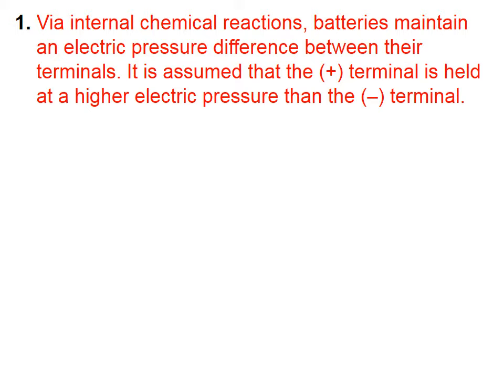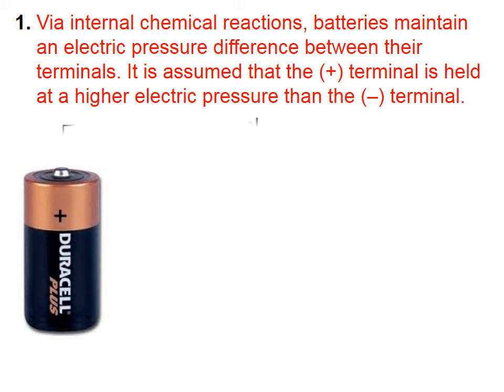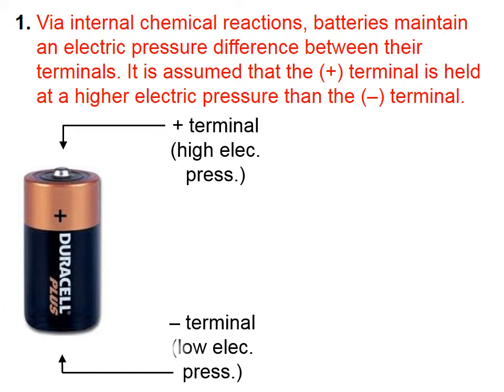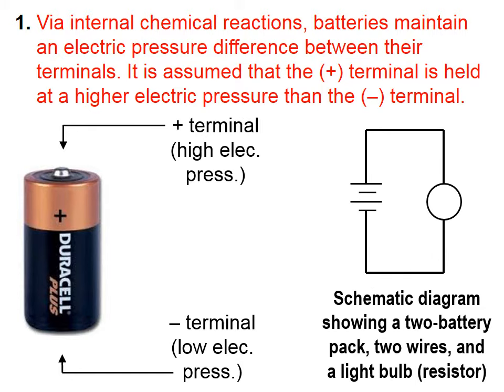Via internal chemical reactions, batteries maintain an electric pressure difference between their terminals. It is assumed that the positive terminal is held at a higher electric pressure than the negative terminal. Here we have our battery, with a positive terminal assumed to have a high electric pressure, and the negative terminal assumed to have a low electric pressure.